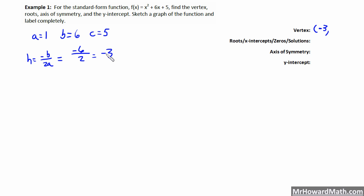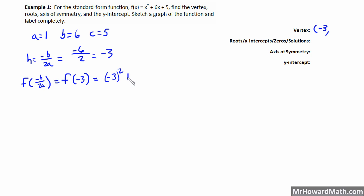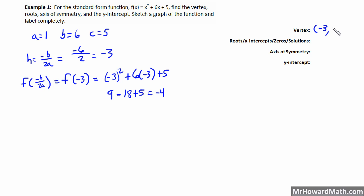To find our Y coordinate, the K value, we take negative 3 and plug it back into the function. K equals F of negative 3. Substituting: negative 3 squared plus 6 times negative 3 plus 5. That gives us 9 minus 18 plus 5, which equals negative 4. So our vertex is at negative 3, negative 4.